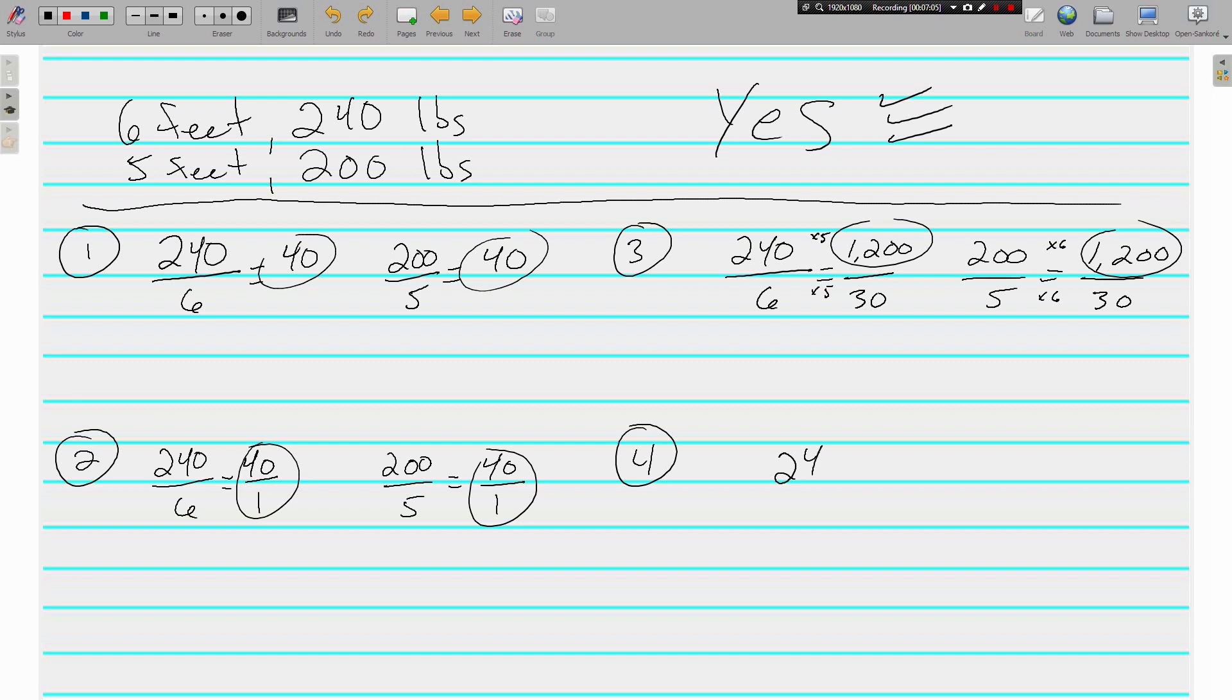And the last way is the cross-products. 240 over 6. Is it equal to 200 over 5? Check the cross-products. 6 times 200 is 1,200. And 5 times 240 is 1,200. Again, we're getting the same numbers that we got in method number 3. And again, we see that they're the same.